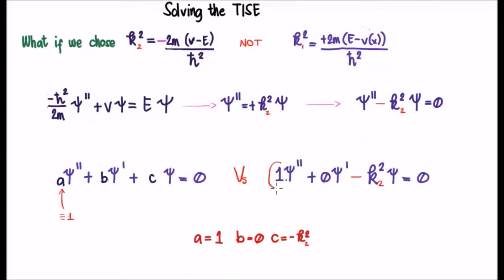We'll see of course that the coefficient a is equal to 1, that the coefficient b is equal to 0, in other words we don't have a first derivative term, and that the coefficient c is minus k₂ squared, which is summarized here.